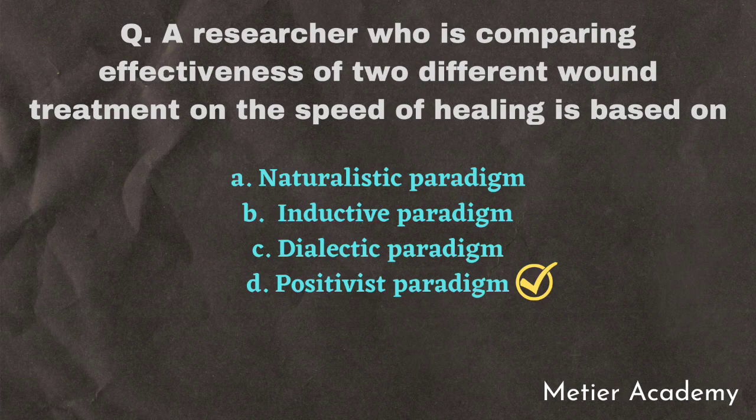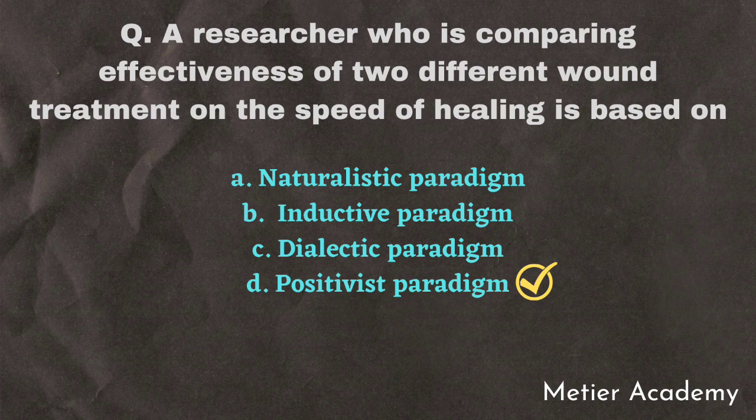The rationale is: the naturalistic paradigm is based on multiple interpretations of reality; the inductive paradigm is based on observation and theories; the dialectic paradigm is qualitative; and the positivistic paradigm — also called the scientific and normative paradigm — tends to control research conditions through scientific methods. It uses two groups: experimental and controlled, which is the key feature here.